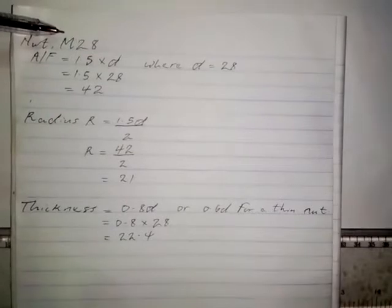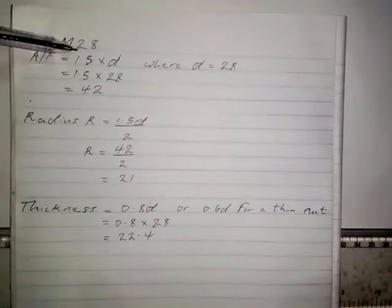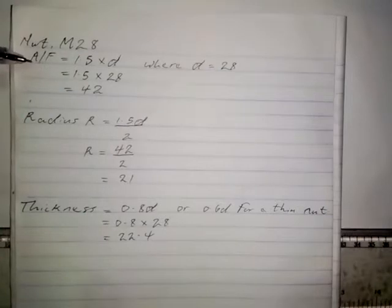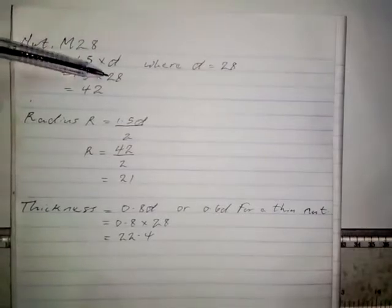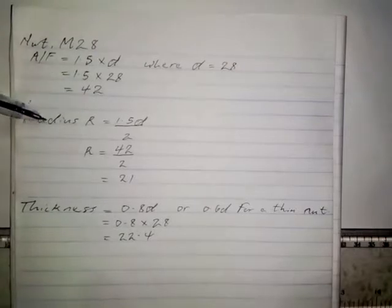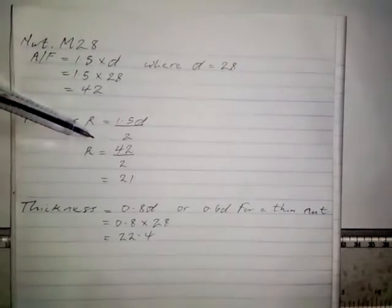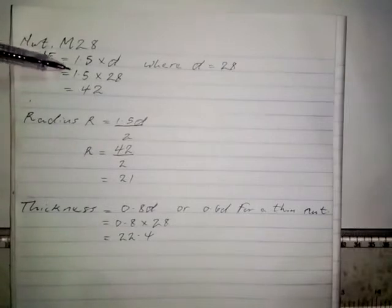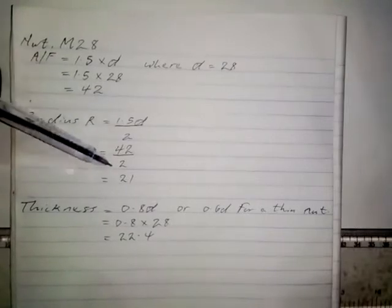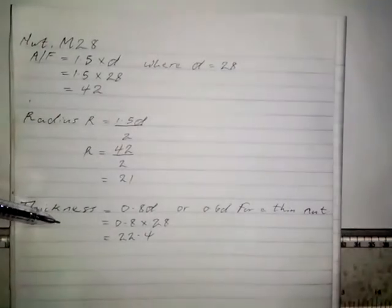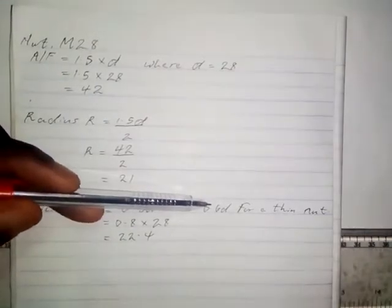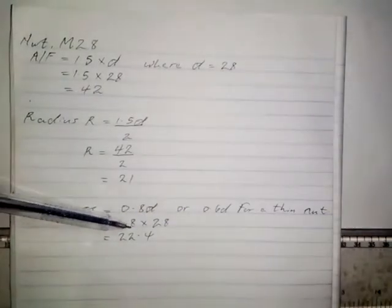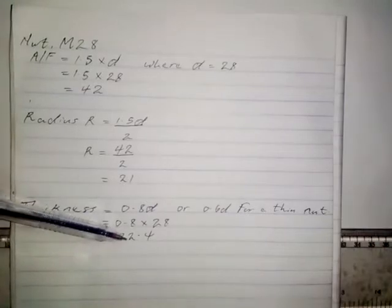The nut we want to construct in views is M28. You need to calculate the distance across flat, which is 1.5 times D. D is 28, so 1.5 times 28 gives us 42mm. The radius R is half of the distance across flat: 42 divided by 2 gives us 21mm. The thickness of the nut is 0.8D, so 0.8 times 28 gives us 22.4mm.